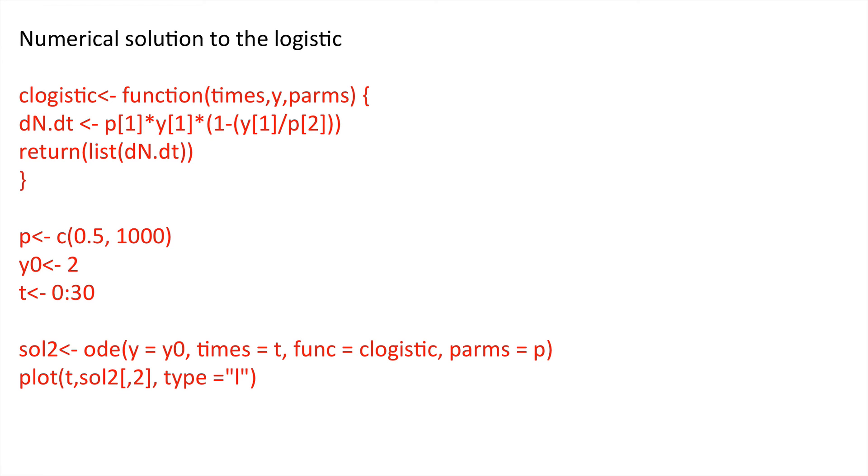Now we can plot time against the second column of sol2 which is the population sizes integrated up to that time period. And I'm using type L to give a nice continuous line. And this is what we get.